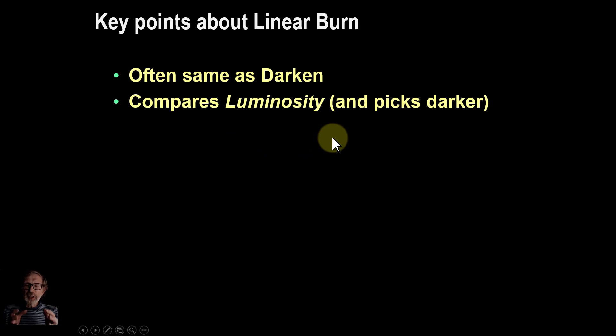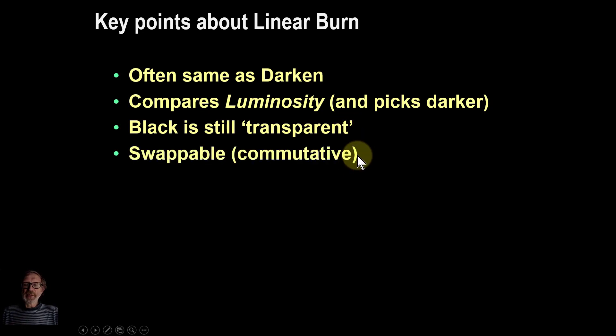It compares the luminosity, this lightness, and picks up the darker ones, the darker color it chooses. Black is still transparent as in all of the blend modes and it is swappable. In other words it doesn't matter which way around the blend layer and the base layer are. We say it's commutative.